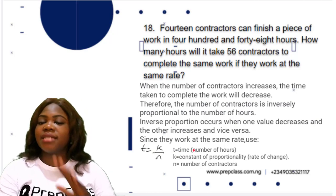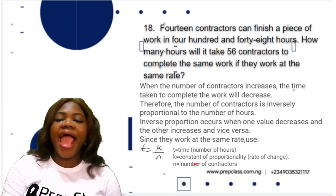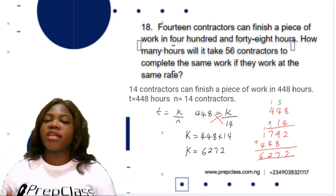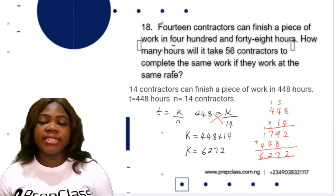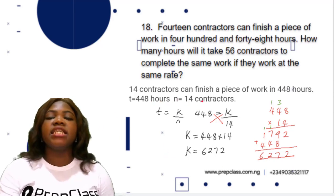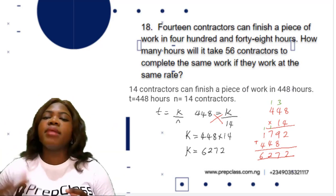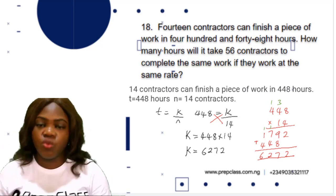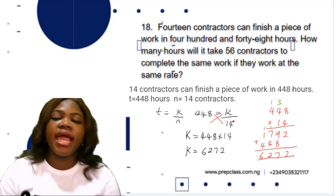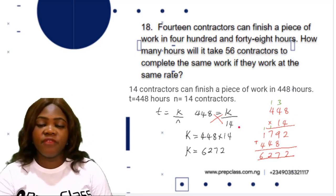We use the formula t = k/n, where t is time (hours), k is the constant of proportionality (the rate), and n is the number of contractors. For the first scenario: t = 448 hours and n = 14 contractors. Substituting: 448 = k/14, so cross-multiplying gives k = 448 × 14.